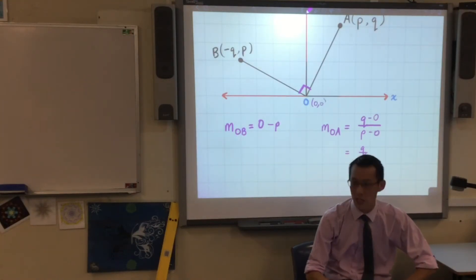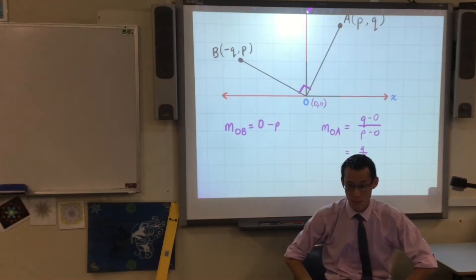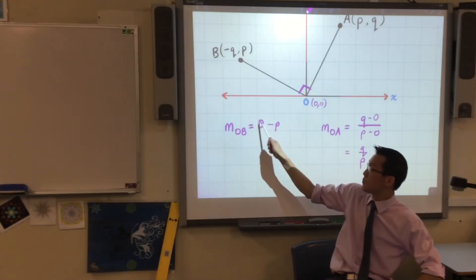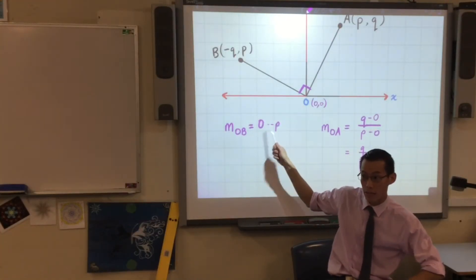Because I'm comparing it to the origin. The origin's coordinates are zero, zero. Do you agree? So that there, that's Y2 minus Y1. That's the gradient formula.